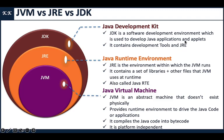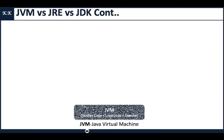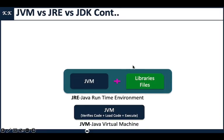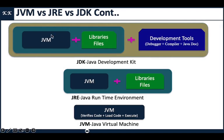JDK stands for Java Development Kit. JDK is a software development environment used to develop Java applications and GUI programs. It contains development tools and the JRE. JVM is a subset of JRE, and JRE is a subset of JDK. In short, JDK includes JRE and JVM. The responsibility of JVM is to verify and execute bytecode; JRE combines JVM plus libraries; and JDK combines JVM plus libraries plus development tools such as debuggers, the compiler, and Java documentation.